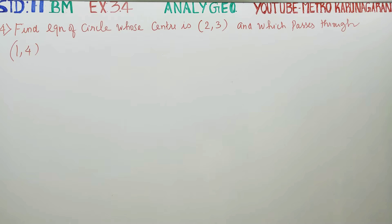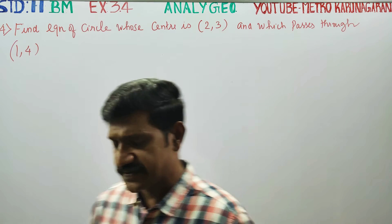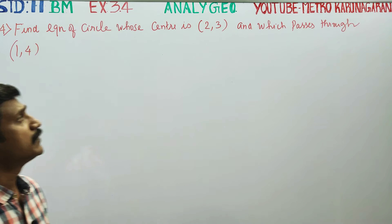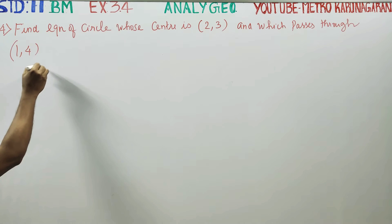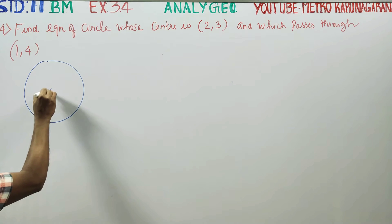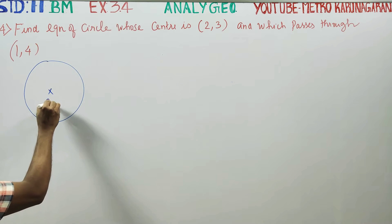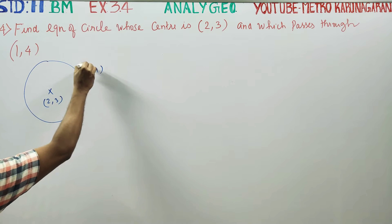Dear 11th Standard Business Math students, in exercise number 3.4, find the equation of the circle whose center is (2,3) and which passes through (1,4). So our center is (2,3) and it passes through (1,4).